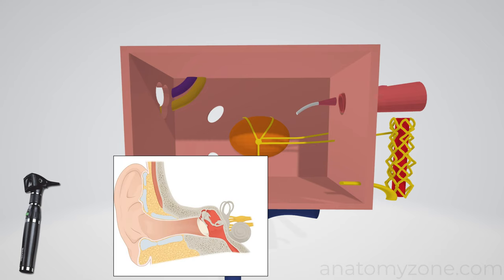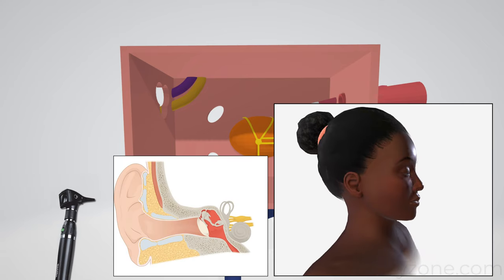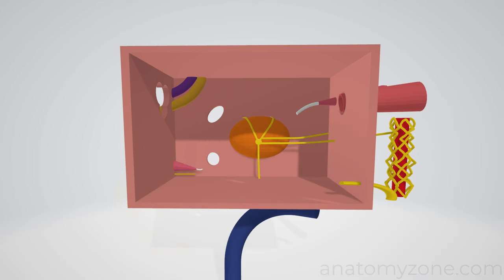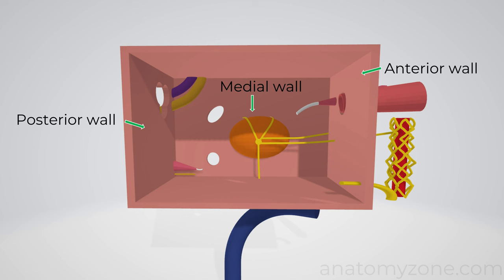In this model, imagine you're looking directly into the right ear with an otoscope. This is a lateral view of the middle ear, but we've lifted off the lateral wall formed by the tympanic membrane to look inside. This back wall here is therefore the medial wall, this is the posterior wall, this is the anterior wall, this is the roof and this is the floor.